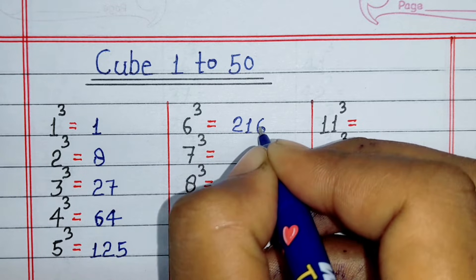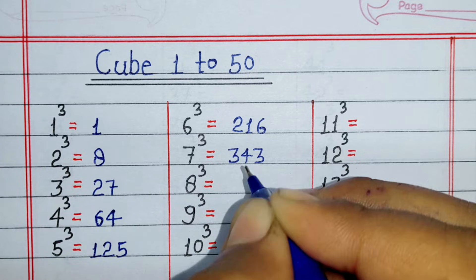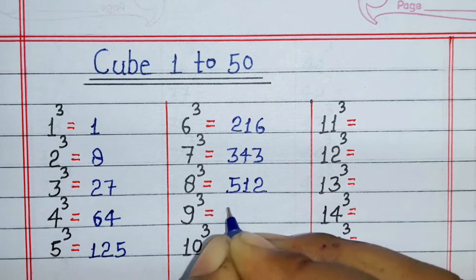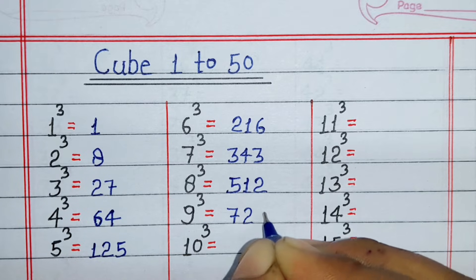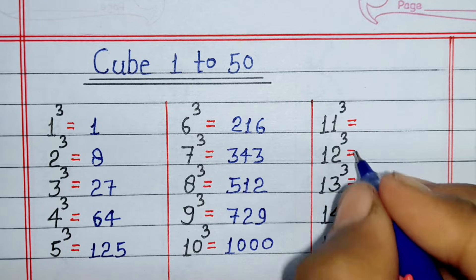Cube of 6 is 216, cube of 7 is 343, cube of 8 is 512, cube of 9 is 729, cube of 10 is 1000.